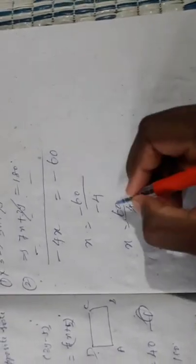Subtracting equation 2 from the multiplied equation 1: 3x − 7x = 120 − 180, giving −4x = −60. Therefore x = 60 ÷ 4 = 15. Substituting x = 15 into equation 1: 15 + y = 40, so y = 40 − 15 = 25.